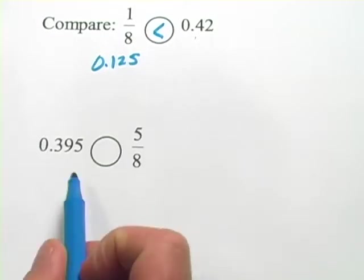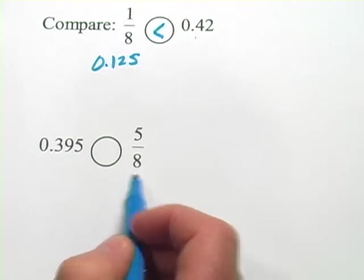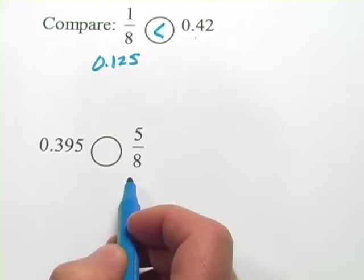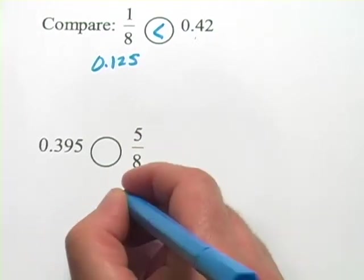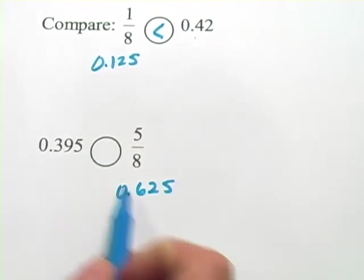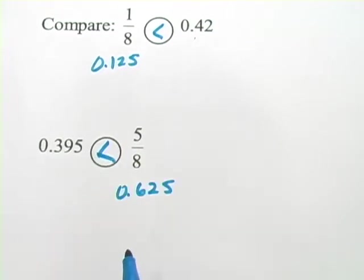All right, let's look at this one. 0.395 and five eighths. Off the top of my head, hard to say. Let's just do the division here. Five divided by eight equals 0.625. That's clearly bigger than 0.395. So 0.395 is less.